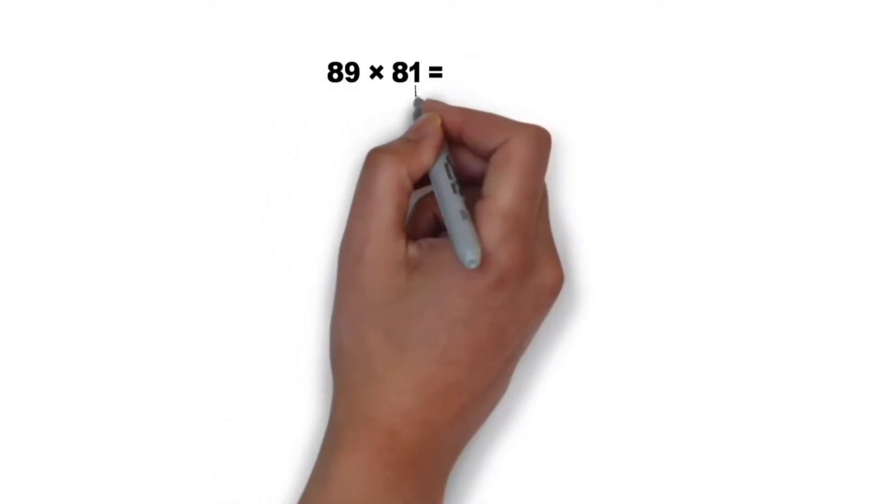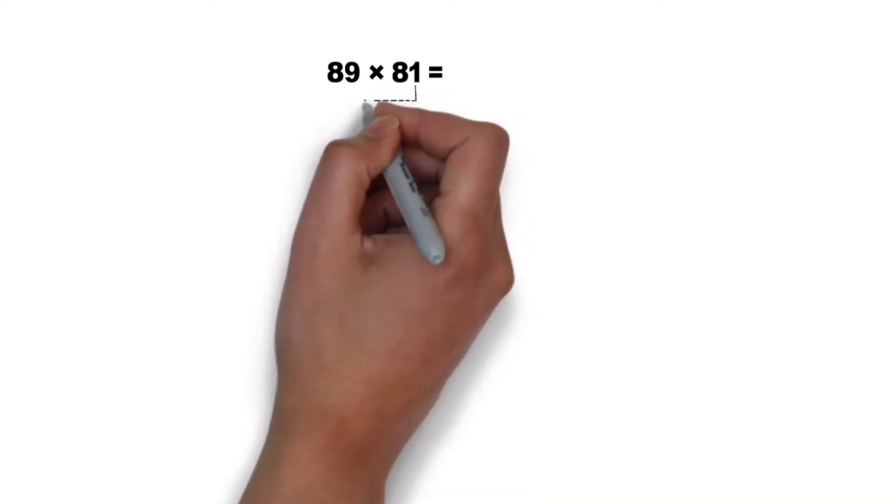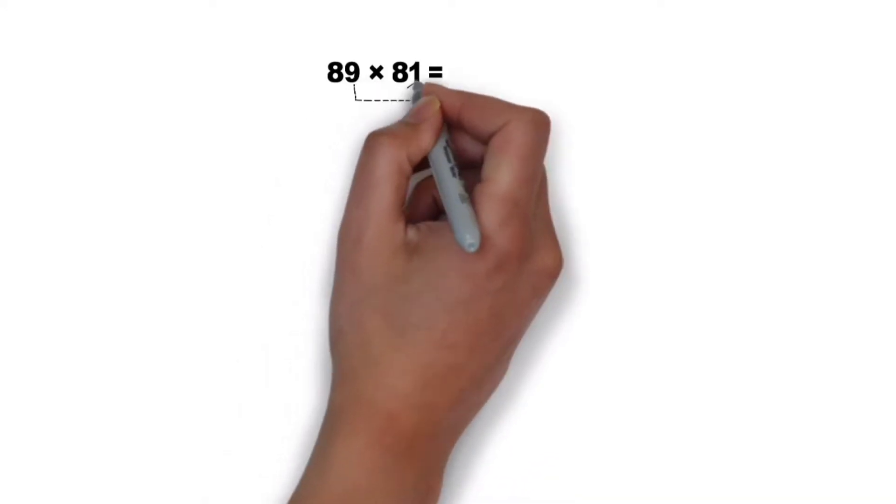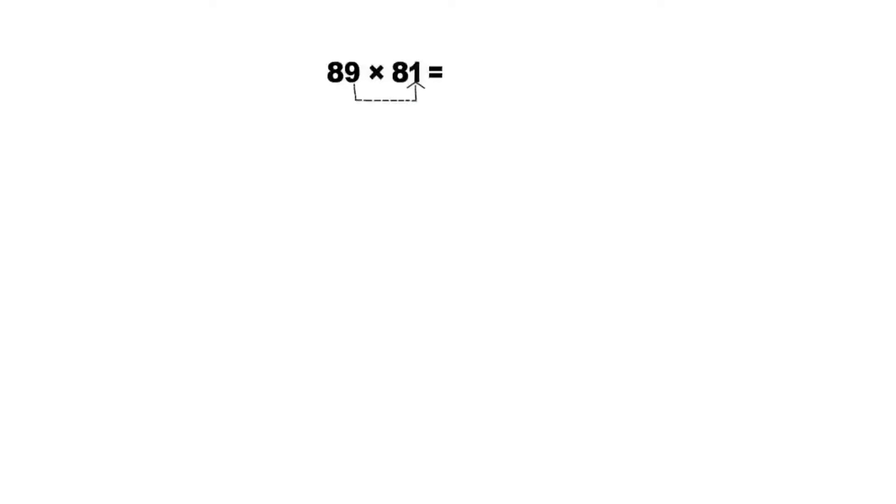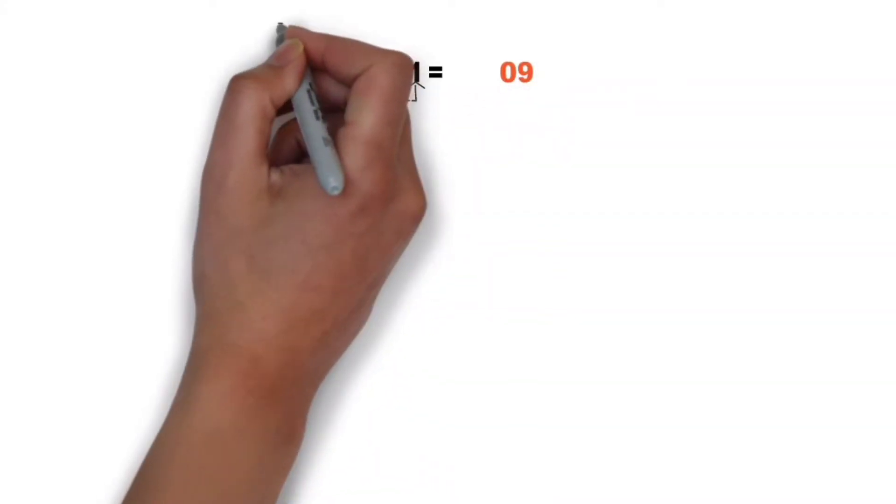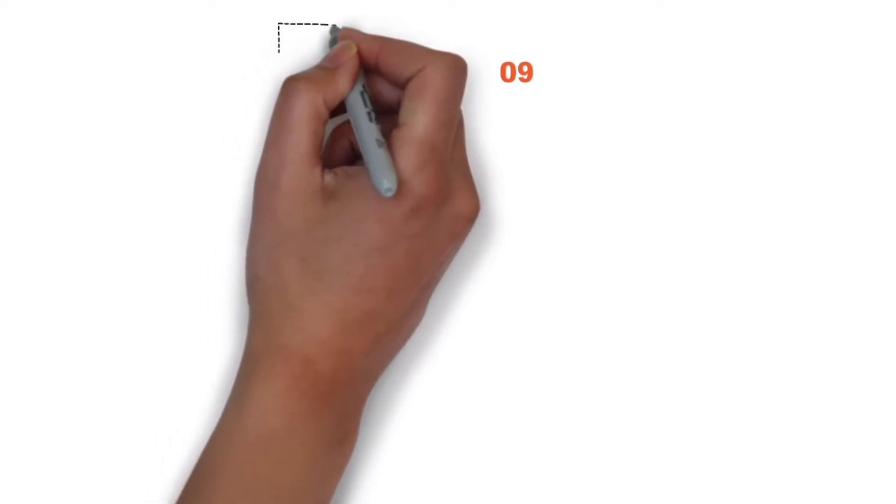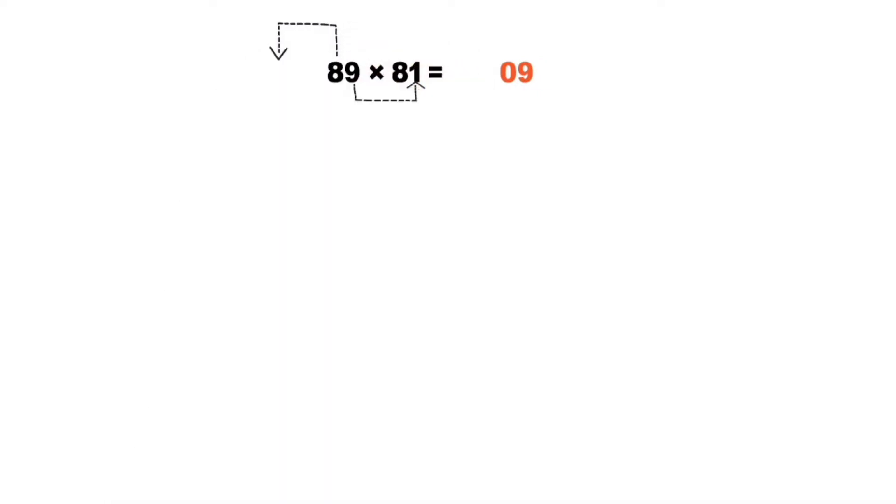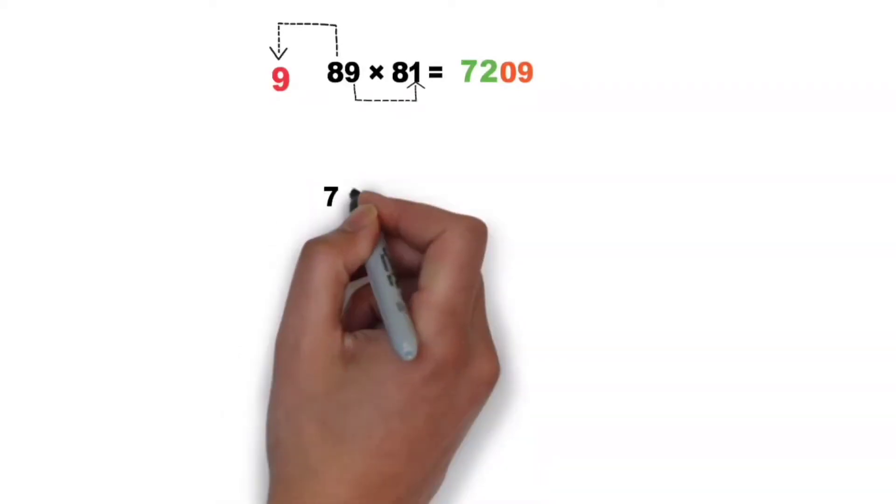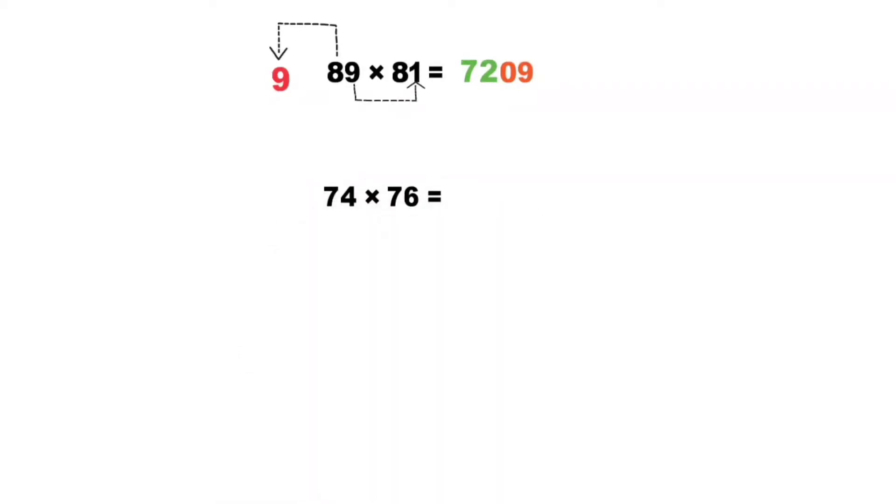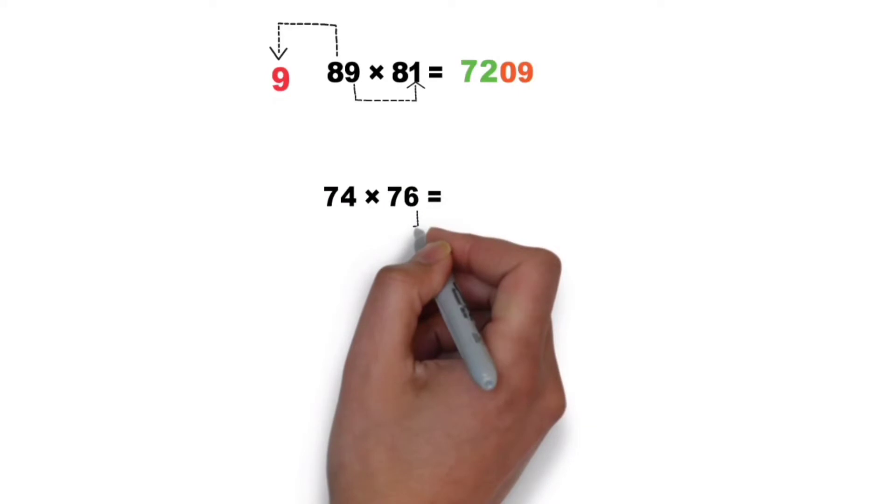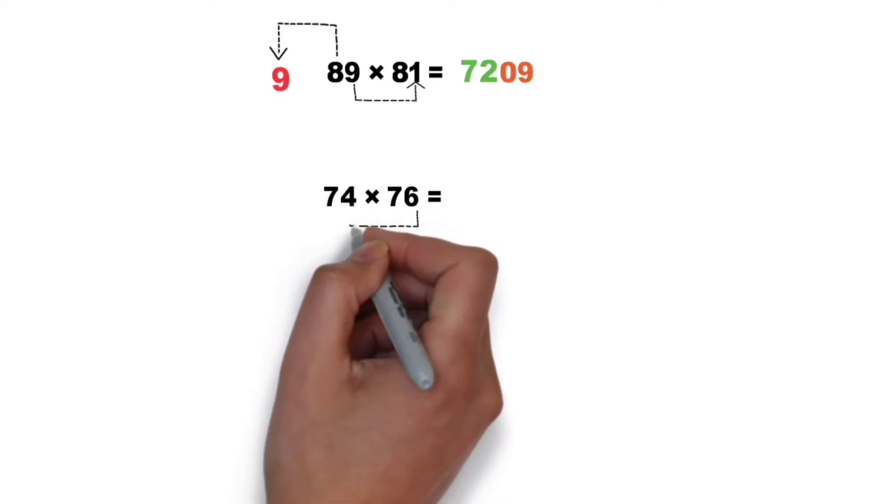For this multiplication, firstly 9 times 1, this is 09. Now 8, next number is 9, so 9 times 8 equal to 72. So answer is 7209.